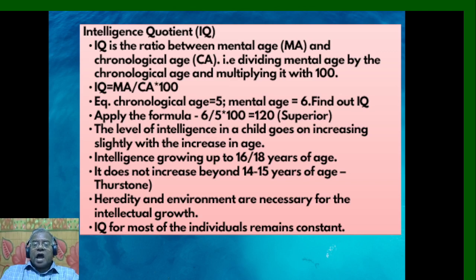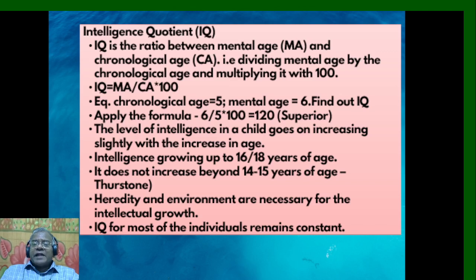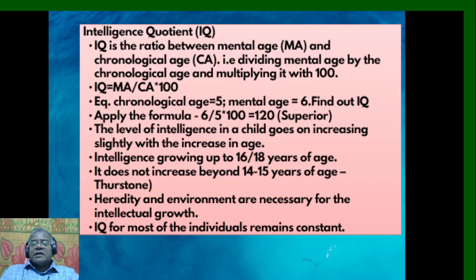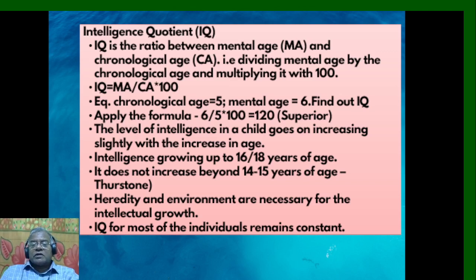IQ is the ratio between Mental Age (MA) and Chronological Age (CA), multiplied by 100. The formula is: IQ = (MA ÷ CA) × 100. For example, if the chronological age is 5 and the mental age is 6, then IQ = (6 ÷ 5) × 100 = 120. Since 120 is above 100, this is considered superior intelligence.